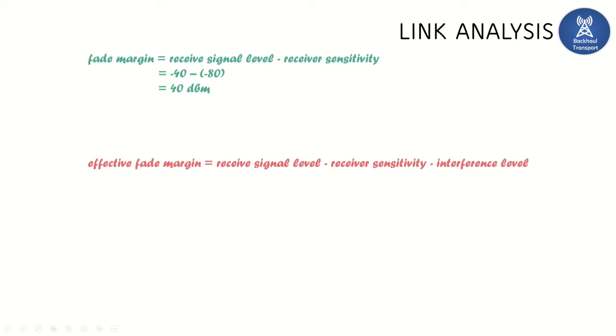Then the effective fade margin is 40 minus 10, that interference level, so it will be 30. So even though theoretically the fade margin is 40 dBm, the effective fade margin is 30 dBm only because of the interference level. This will be calculated by the tools itself, so we don't worry about it.